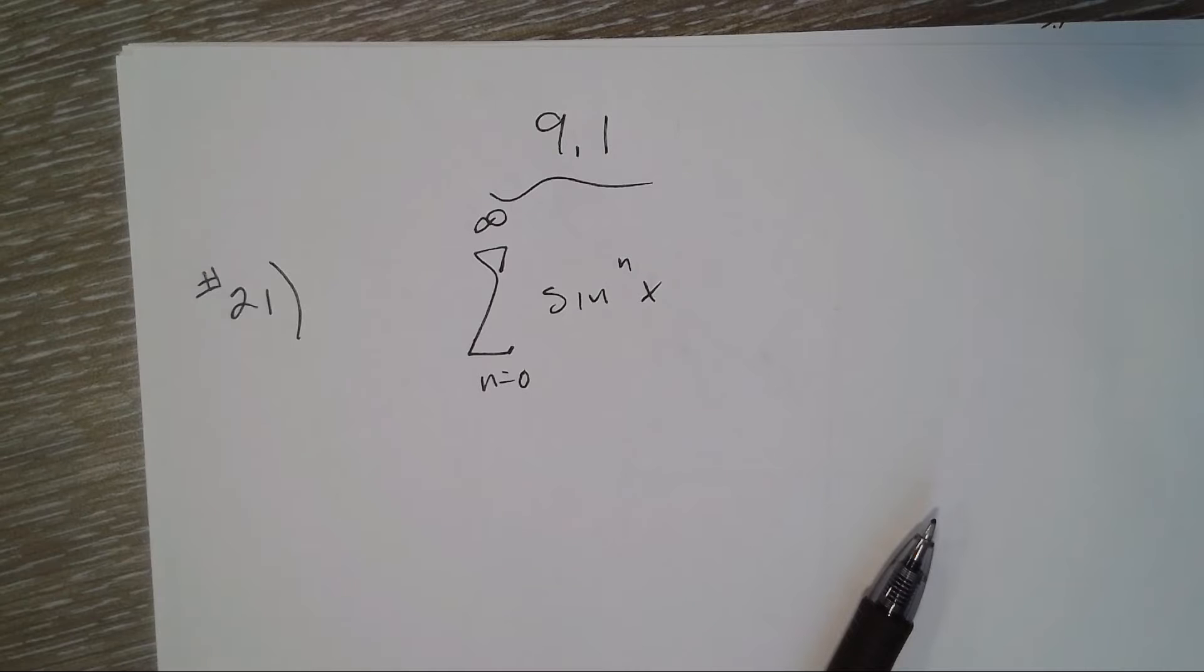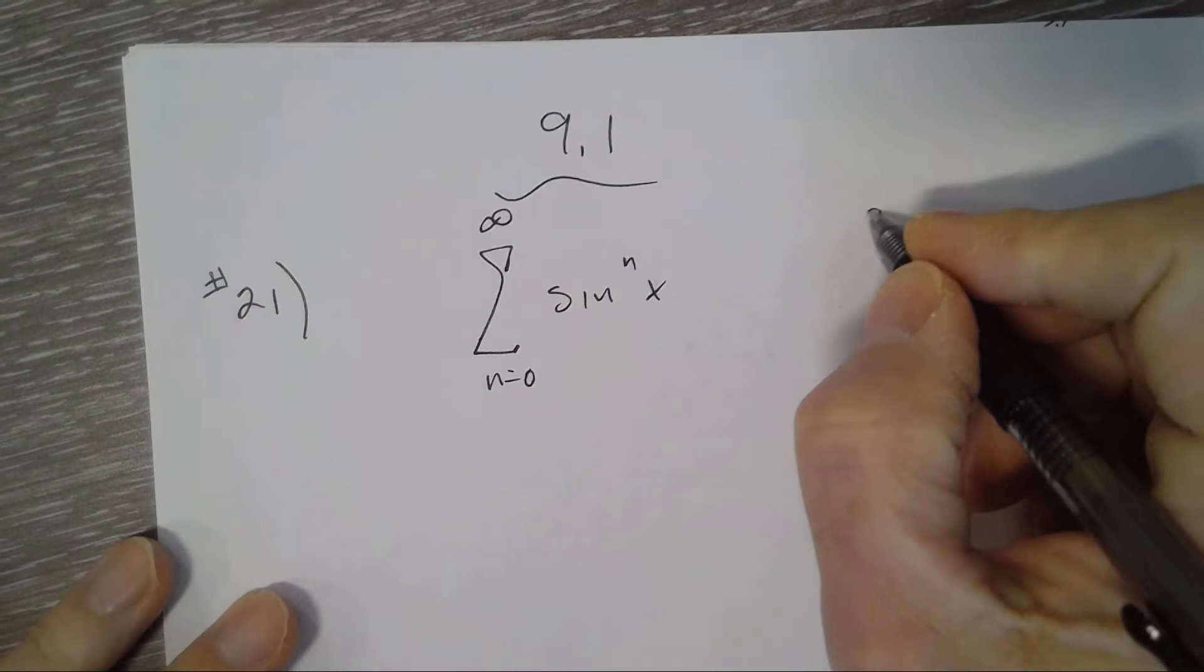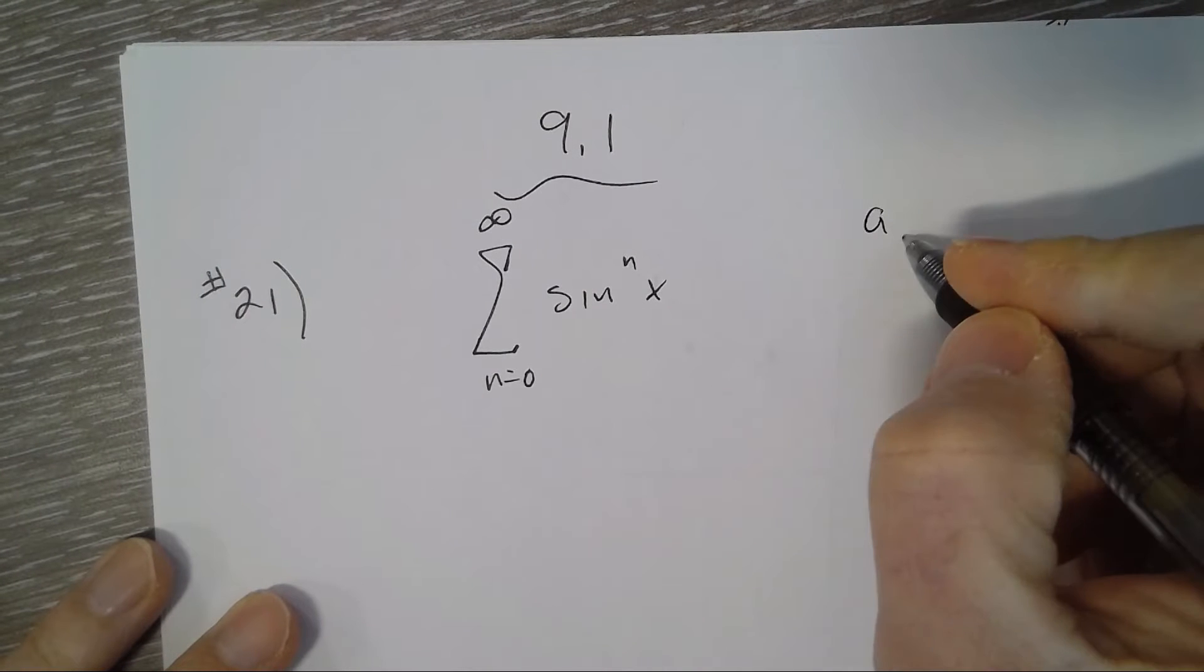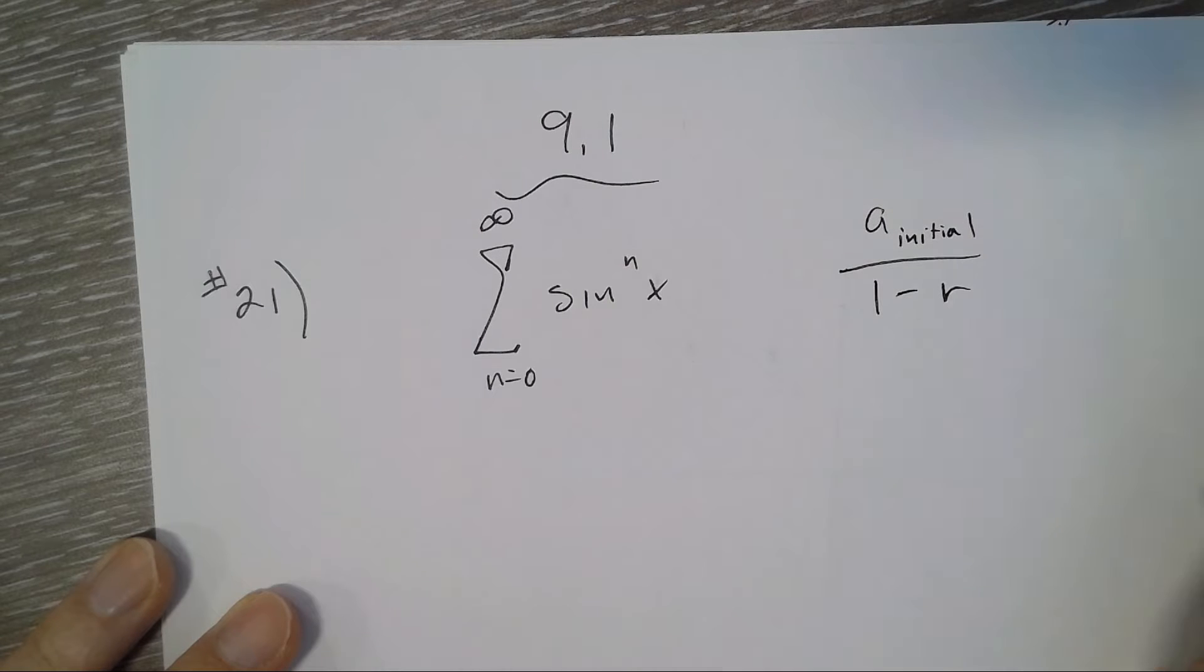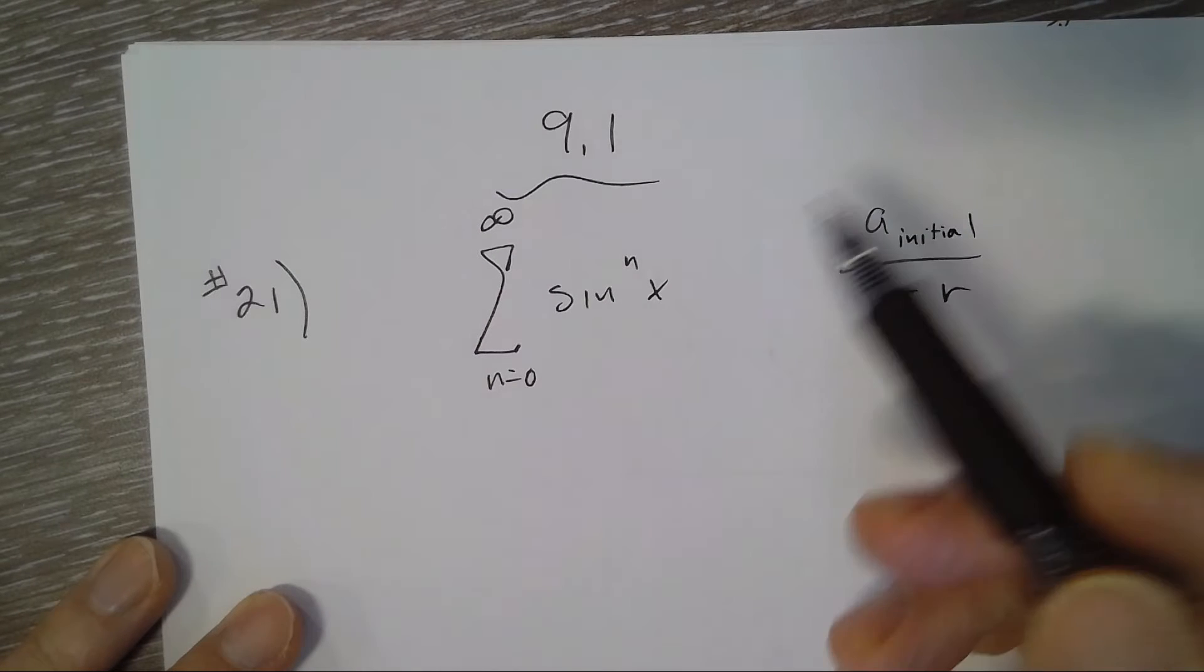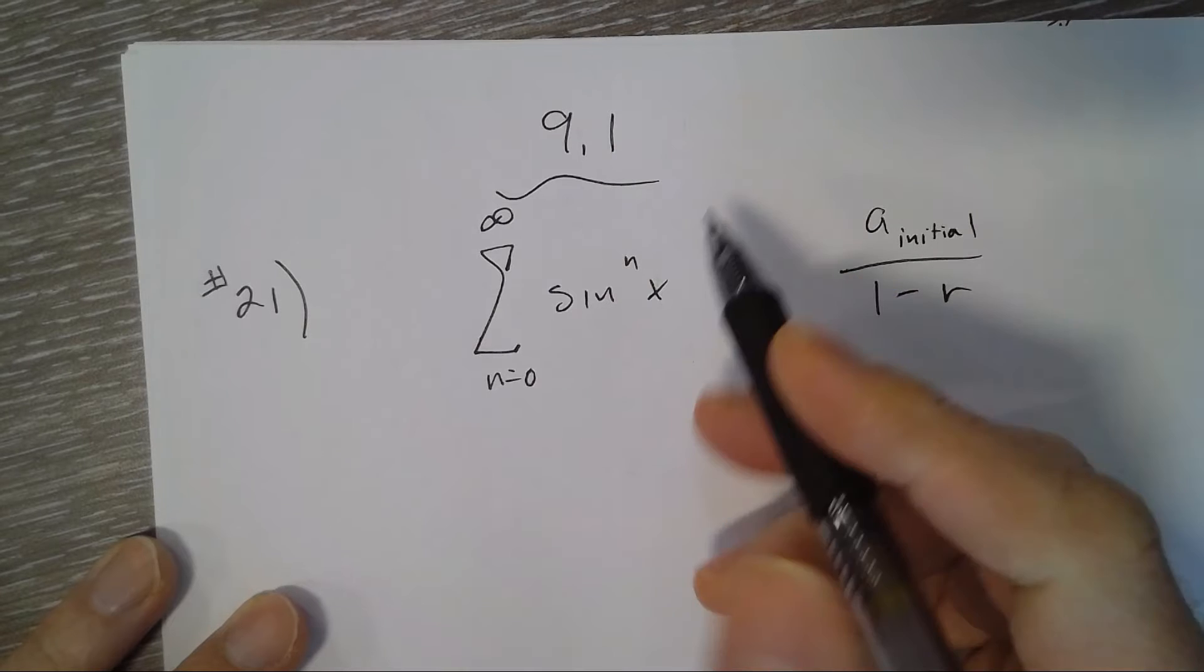So the function of x that it represents is just when you apply a, the initial term, over 1 minus r. Our initial here, when you plug in 0, you're taking sine x to the 0, which is 1.